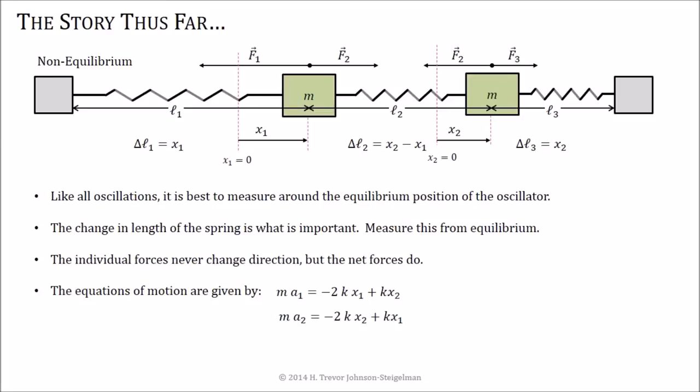In the previous video, I showed you how we look at the stretches in the springs, we measure the positions from the equilibrium point on the oscillators, and we remember that it's the change in length of the spring is what's important. We measure this from the equilibrium positions of each of the slides. The individual forces never change directions, but the net forces do, and we found out that the equations of motions of each of these guys was a combination of a little bit of the x1 and a little bit of the x2 in somewhat of a symmetric bit where the 2k and the k change places with the x1 and the x2.